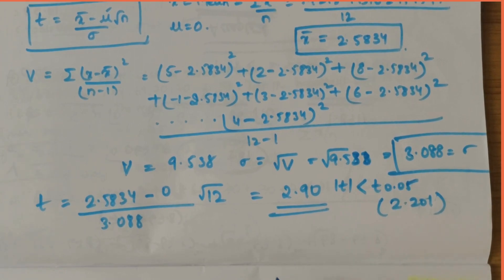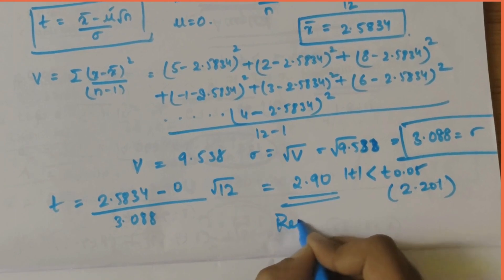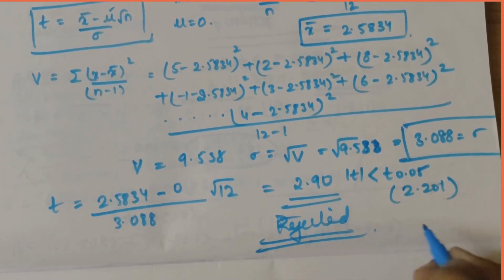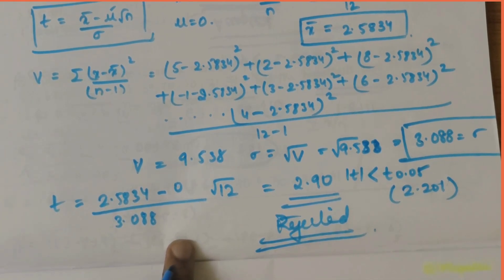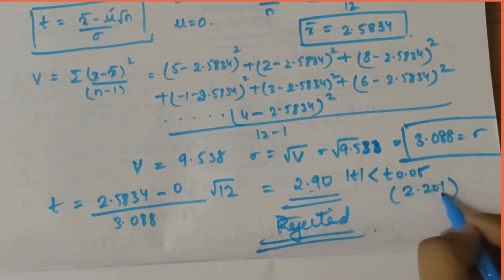In this case, the assumption is rejected at 5 percent level of significance. So we conclude that with 95 percent confidence, the stimulus in general is accompanied with increase in blood pressure.